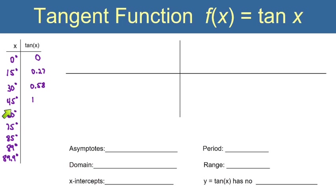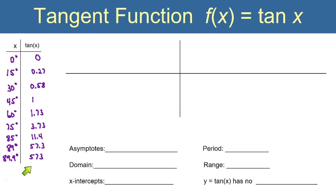The point (45°, 1) is a nice guideline point for us. Then 60° has a tangent of 1.73, 75° gives 3.73, 85° gives 11.4, then 57.3 — look how much it jumped in just 4 degrees! And the tangent of 89.9° is 573. That y-value really gets large as we approach 90 degrees.